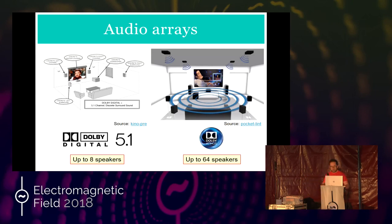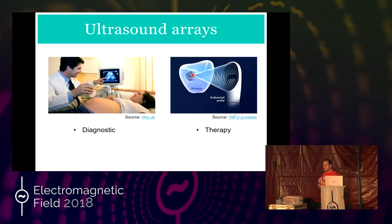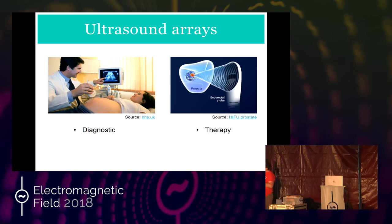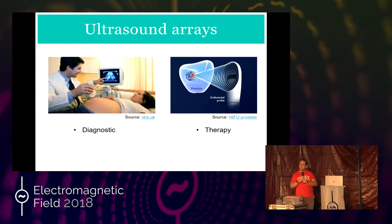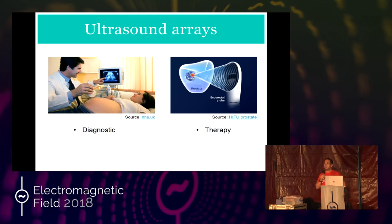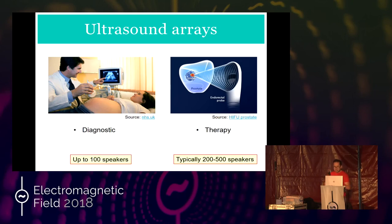There are other applications where you need a lot of speakers to control the shape of sound. One of those is diagnostics. We are all familiar with using ultrasound to see babies in the womb, and now people are using ultrasound also to cure and destroy tumors — this is an image from destroying prostate cancer with ultrasound. You need about 100 speakers to get an effect of a beam which gives you an image on the screen, and if you want to cure, the number increases.